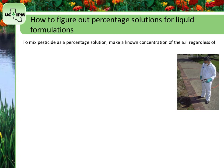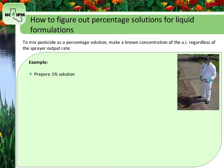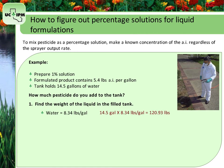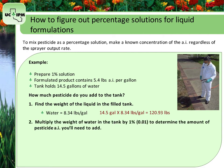To mix pesticide as a percentage solution, you must make a known concentration of the active ingredient, regardless of the sprayer output rate. Let's say you need to prepare a 1% solution of a pesticide active ingredient and you are using a product that contains 5.4 pounds of active ingredient per gallon, and your tank holds 14.5 gallons of water. First, find the weight of liquid in the filled tank: water weighs 8.34 pounds per gallon, so 14.5 times 8.34 equals 120.93 pounds. To mix a 1% solution, multiply the weight of water by 0.01: 120.93 times 0.01 equals 1.21 pounds of active ingredient needed.